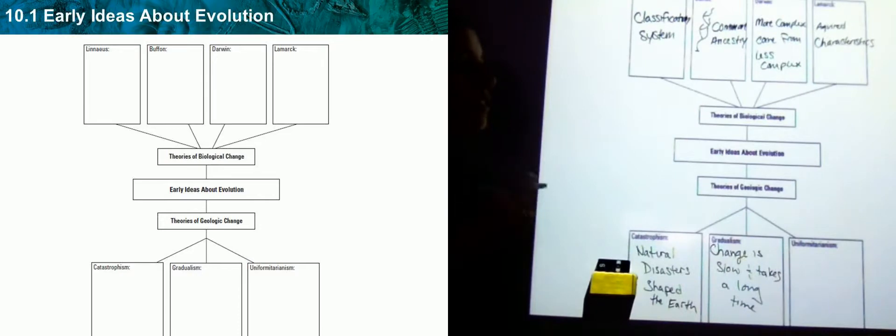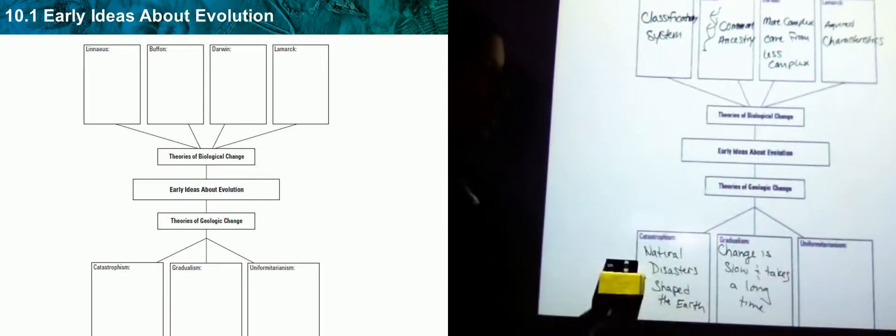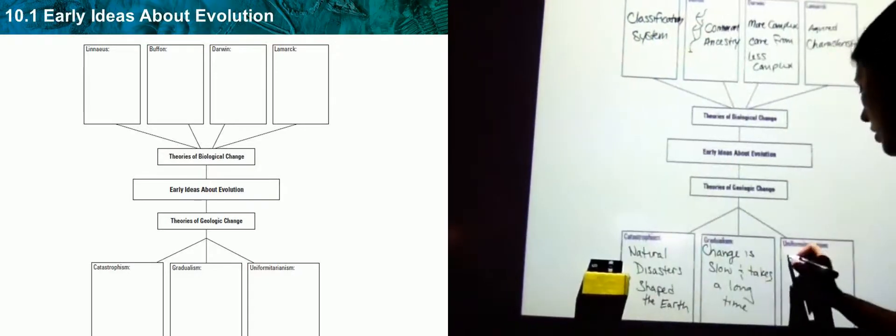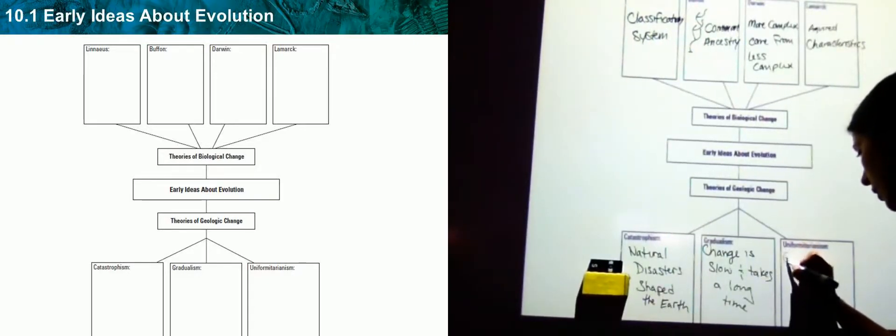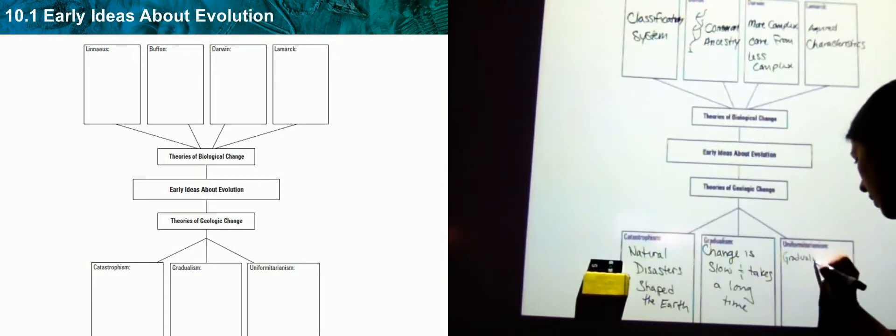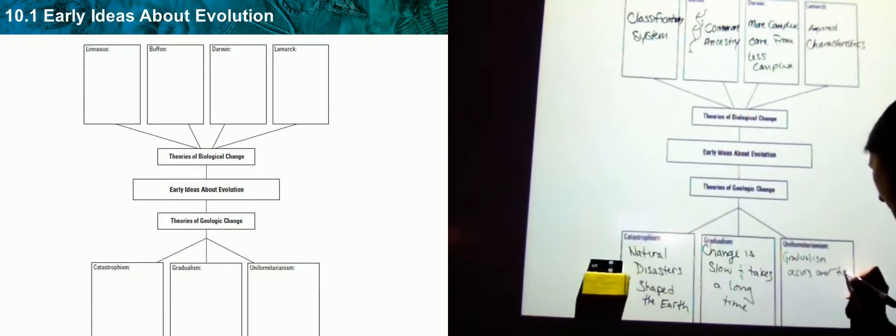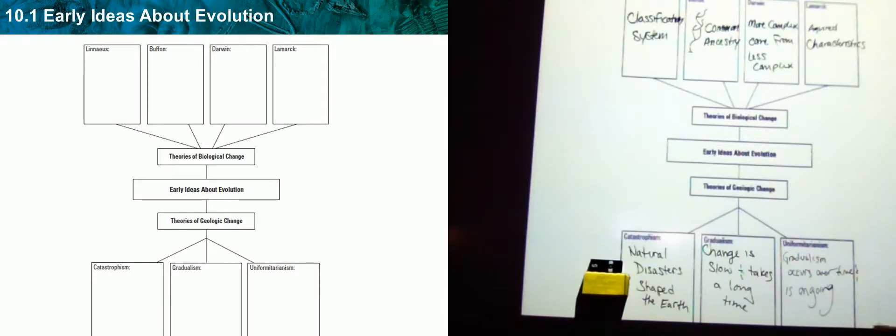And the last one, uniformitarianism, it's the same root thing. Look at the word uniform. Uniform means the same. So it's saying that change does occur, so gradualism occurs over time and is ongoing. I know section one doesn't have a lot to it. Section one is probably one of those sections that's more memorization than anything because you do need to know about these scientists and you do need to know about the theories of change. If you have any questions over 10.1 just come in and ask any one of the science teachers.